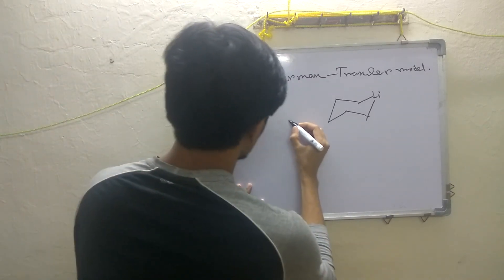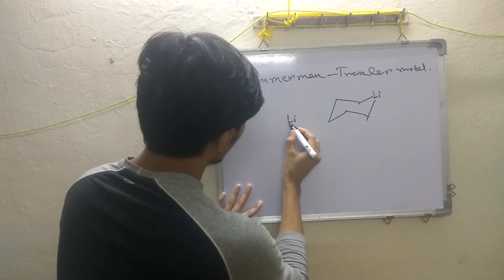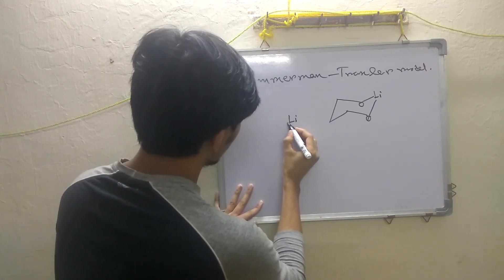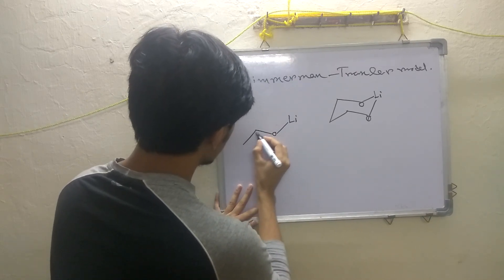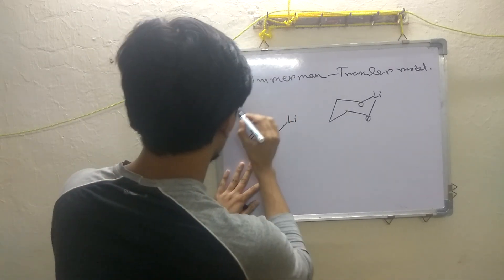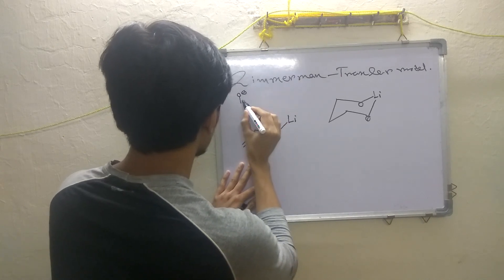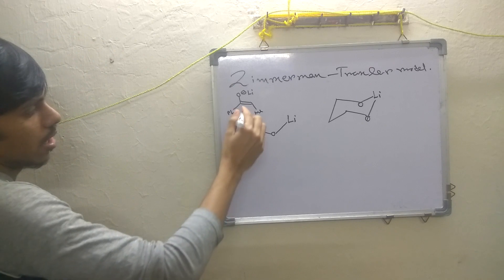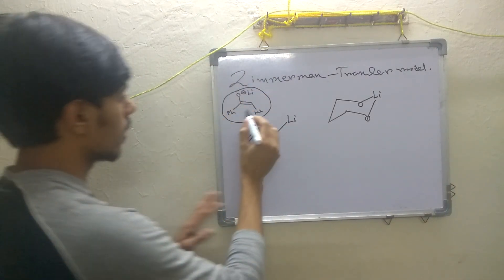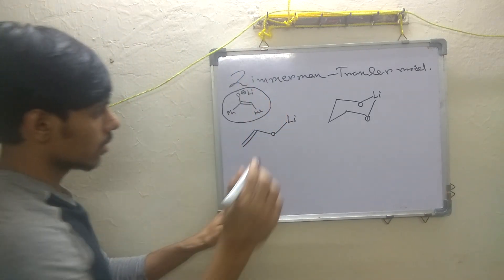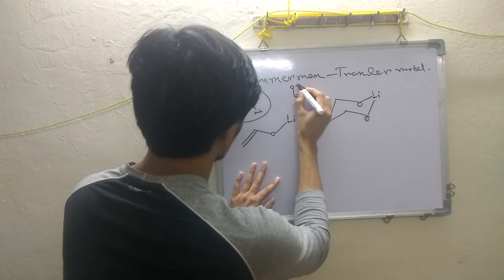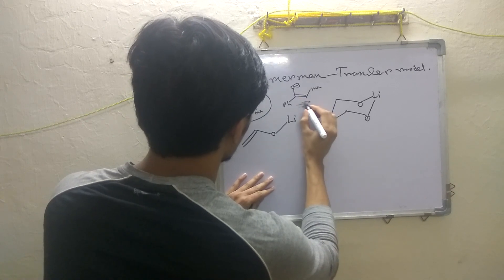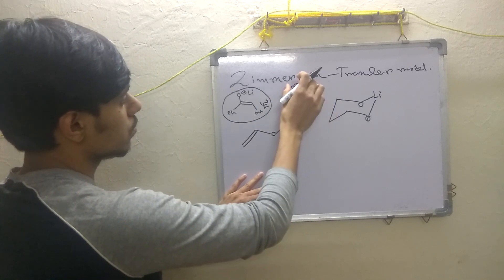The transition state will be six-membered. We can place the lithium at the top. Our components include a lithium enolate: one oxygen atom coordinates with lithium, and the enolate carbon is also part of the ring. The enolate can be either an E-enolate — where the oxygen and methyl are in opposite directions — or a Z-enolate — where the methyl group is in the same direction as the oxygen.